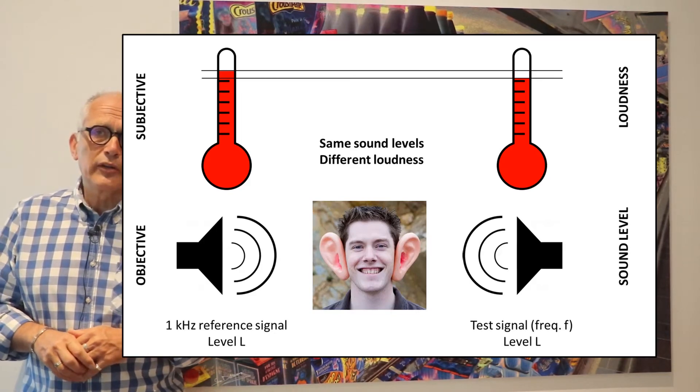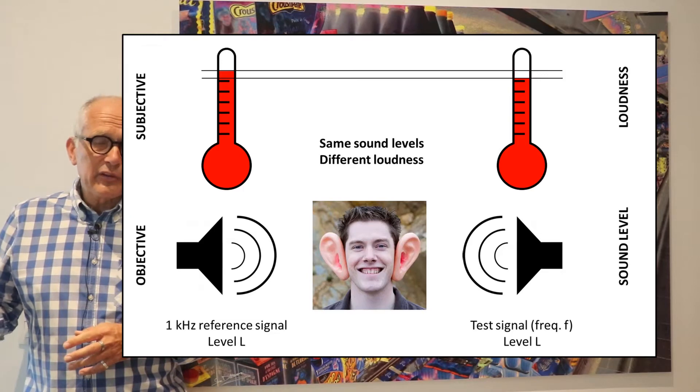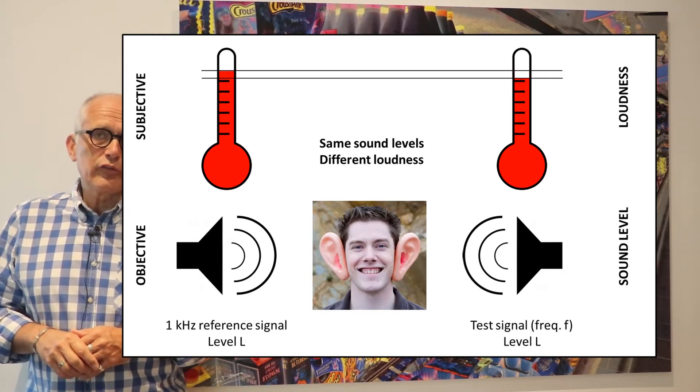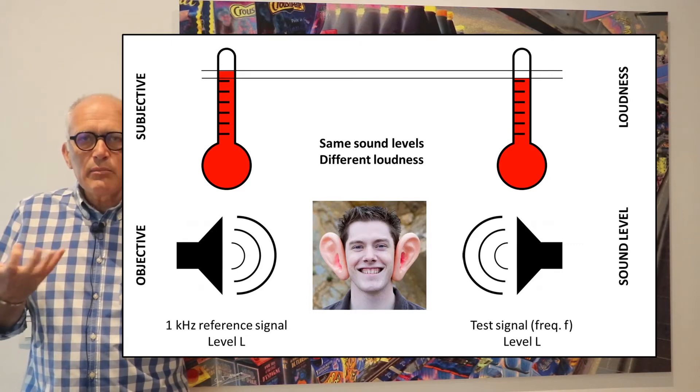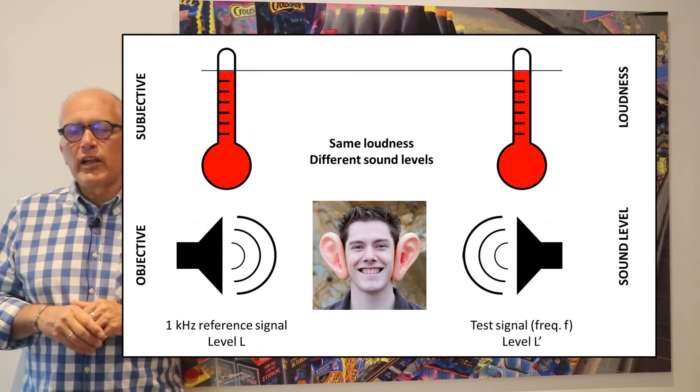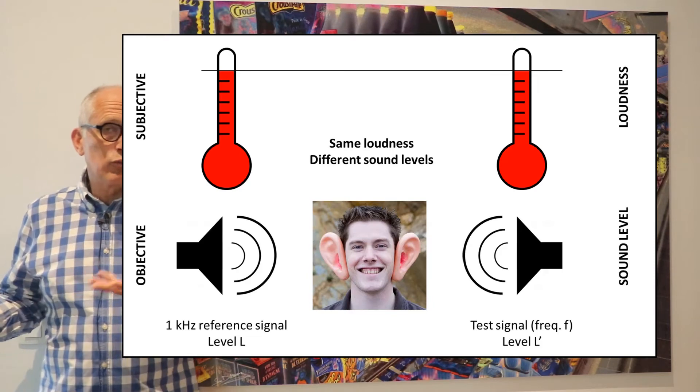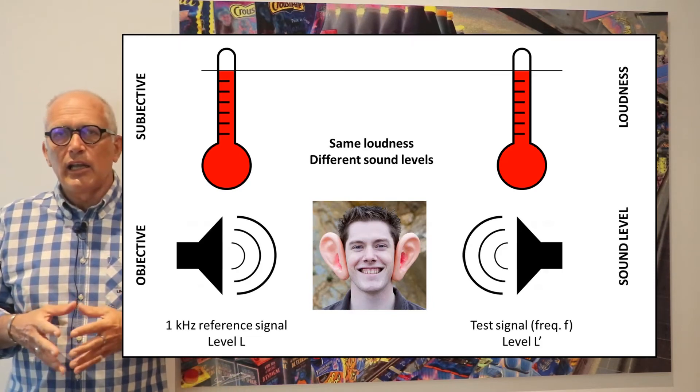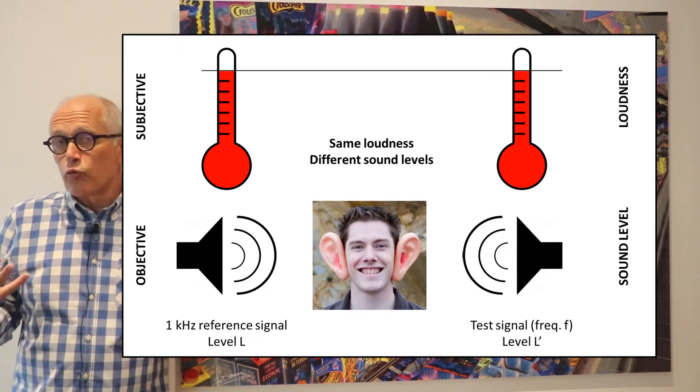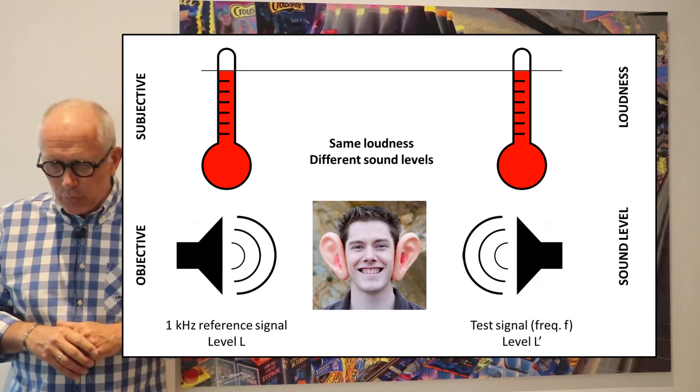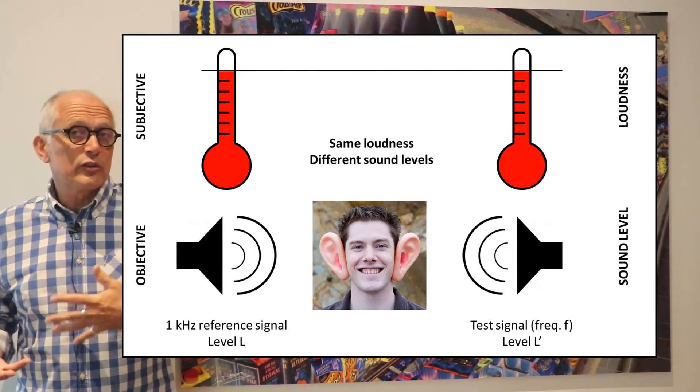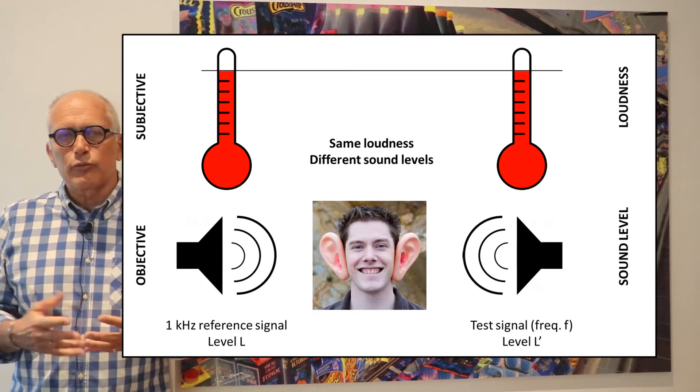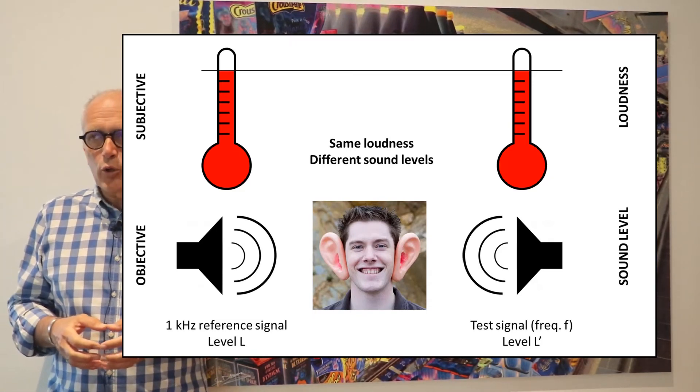They asked each individual participant to adapt the volume of the second sound until it had the same perceived noise level as the first one. The result was another level L prime, and of course usually there was a difference between the two that was reflecting our increased or decreased sensitivity at that frequency with respect to one kilohertz.